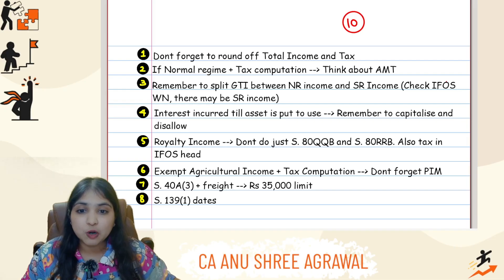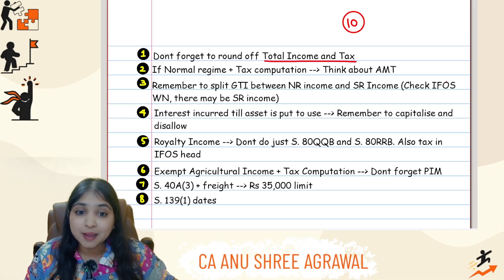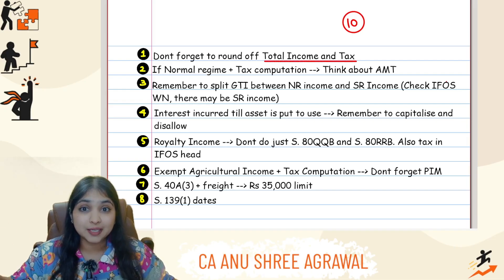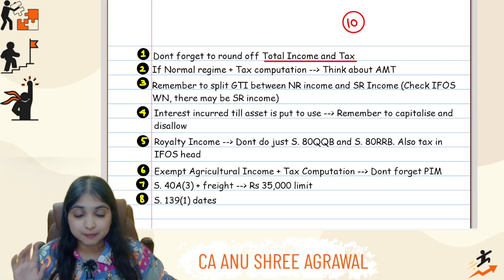Point number one: don't forget to round off your total income and your tax. Total income and tax both have to be rounded off to the nearest multiple of 10.